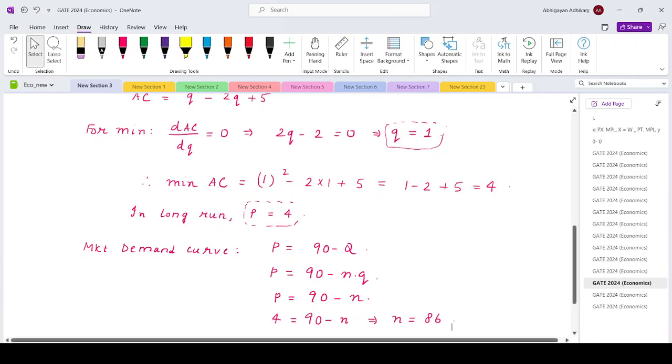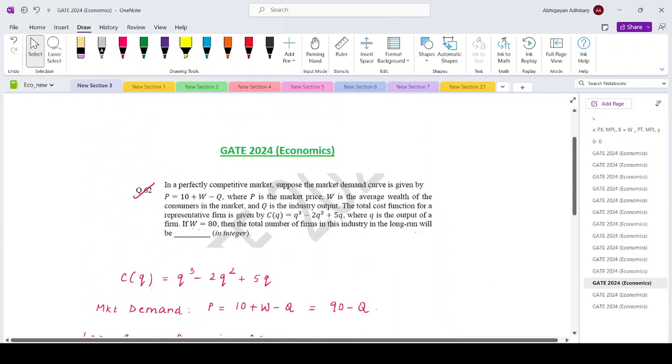86 firms will be there in this market in the long run. So that means your answer to this is 86. Thank you.